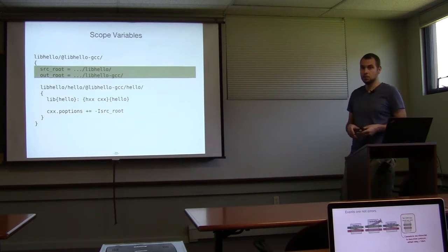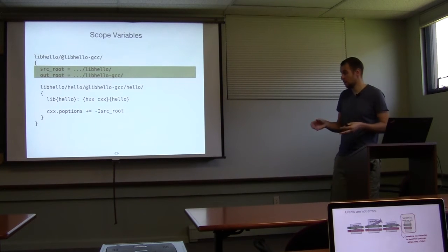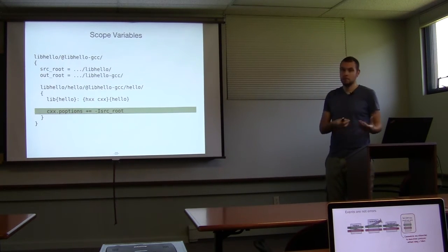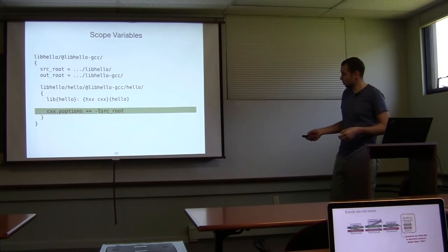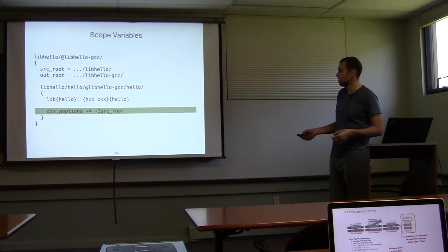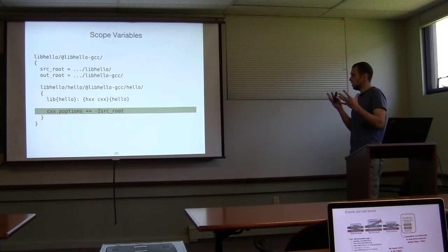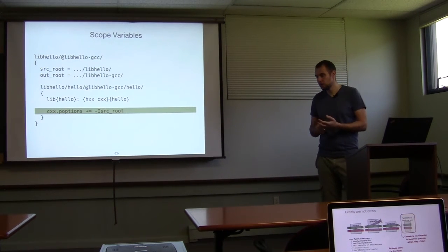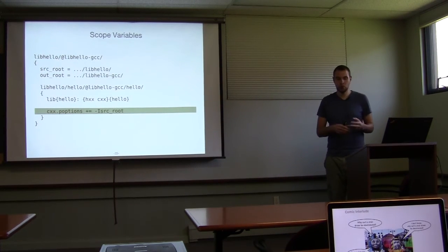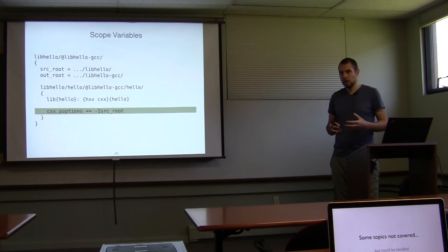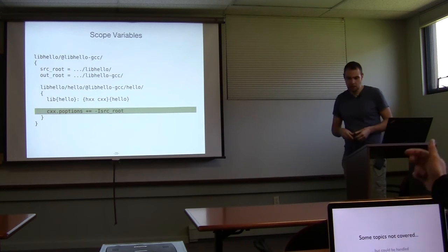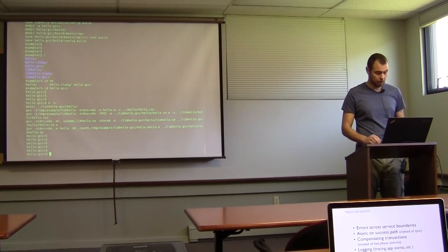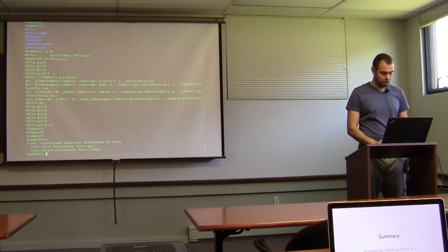Adding variables into the scoping machinery: two variables track the source and output directories and are set by the build system, giving you access to them. They're quite useful for specifying include search paths — we specify that we include all files from the root of the project. Variable lookup: search in the current scope, if not found search the outer scope. With this scoping model we solved all those problems: no global variables, projects don't step on each other, targets end up predictably.